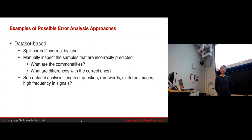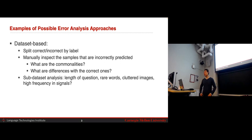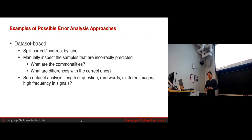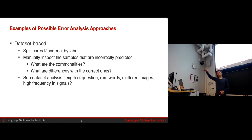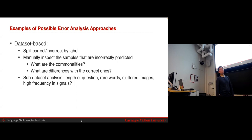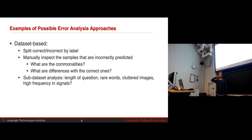Another general way is to partition your dataset into sub-datasets. For example, you might hypothesize that the length of a question is a factor that makes the model struggle. Other factors could be certain rare words, cluttered images, or signals with lots of noise or high frequency. Partition your dataset according to that factor — group by short questions, medium length questions, very long questions — and plot the performance. You can then see whether performance decreases with the length of your question. Don't just report that the failure rate is 25%; we really want to see all these detailed cases of where the model is failing.